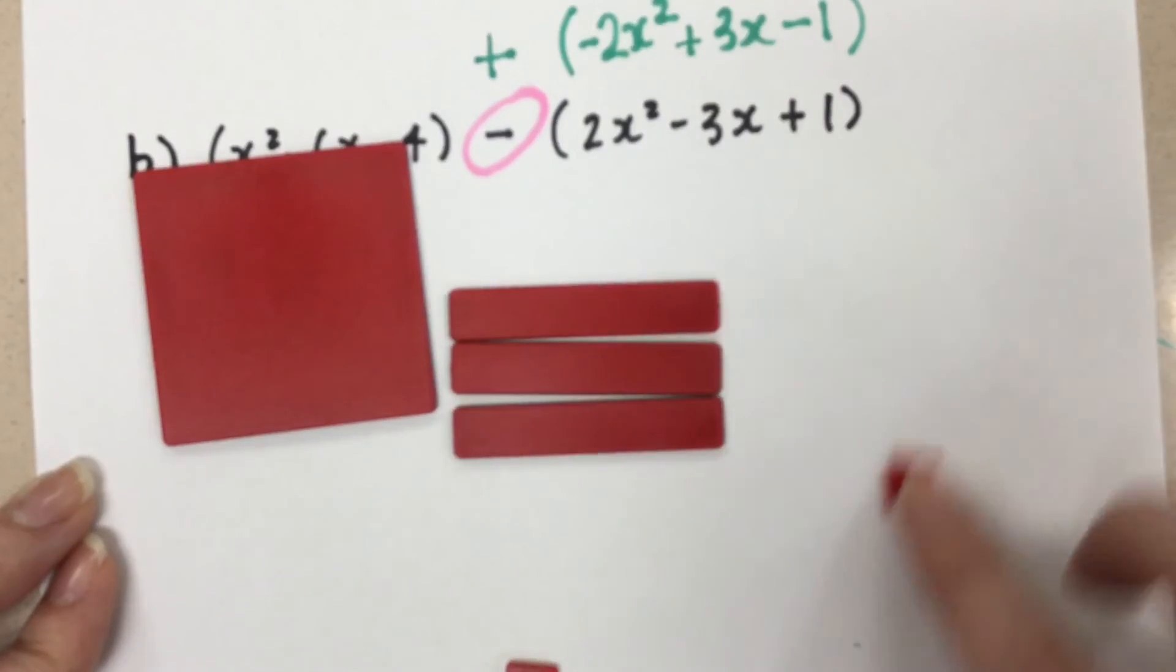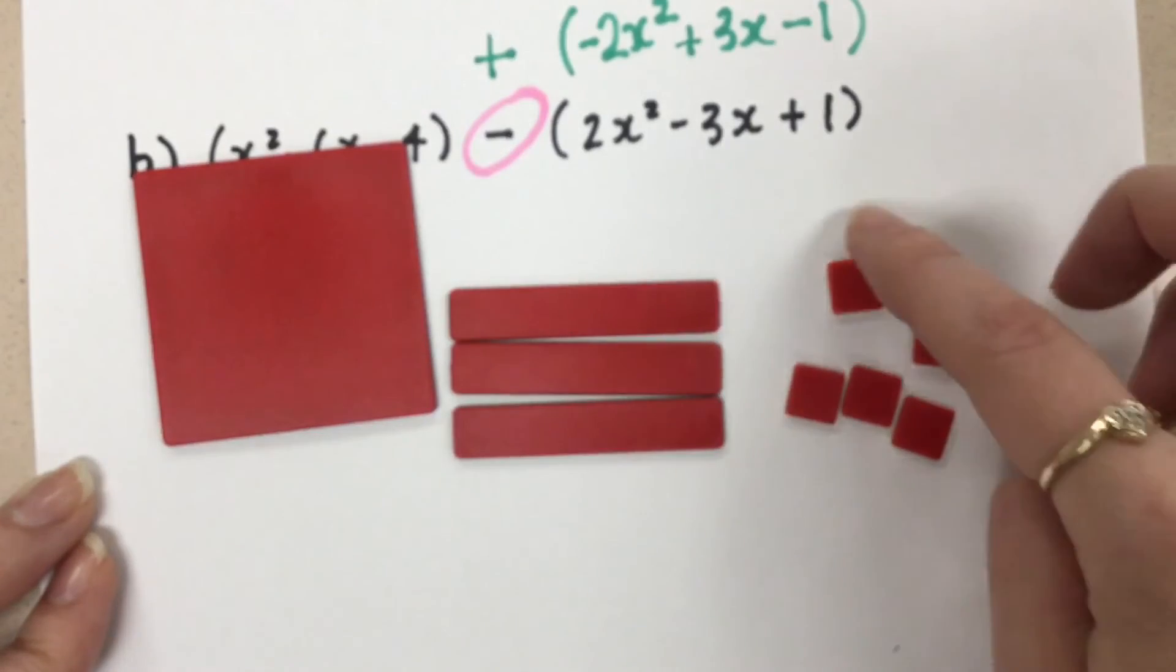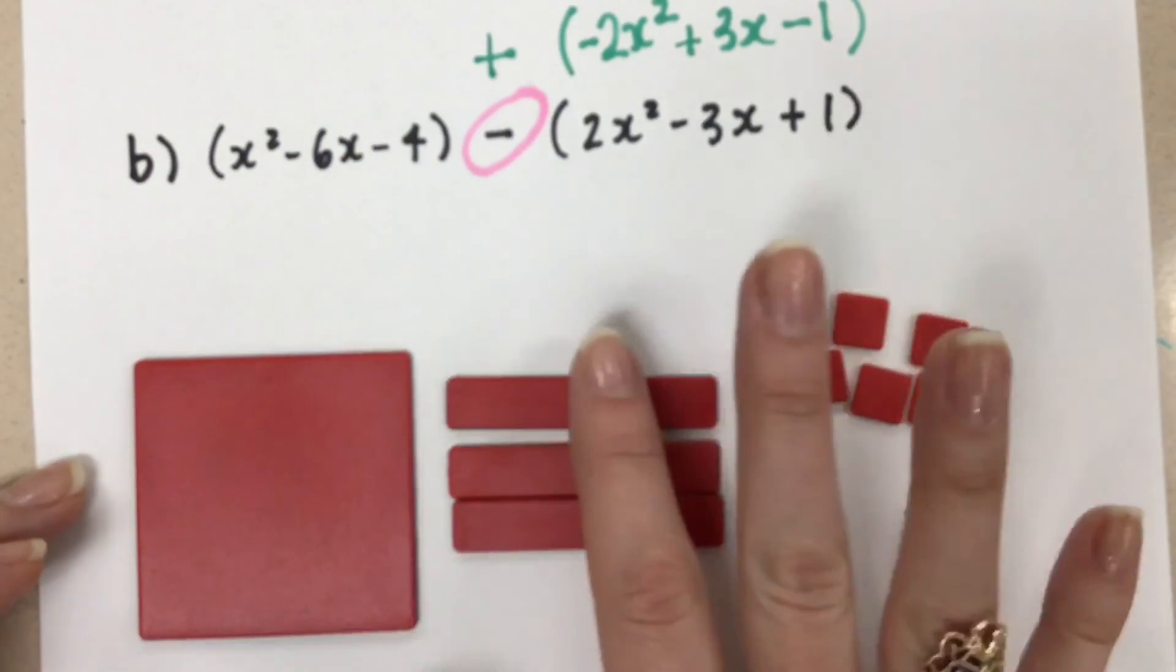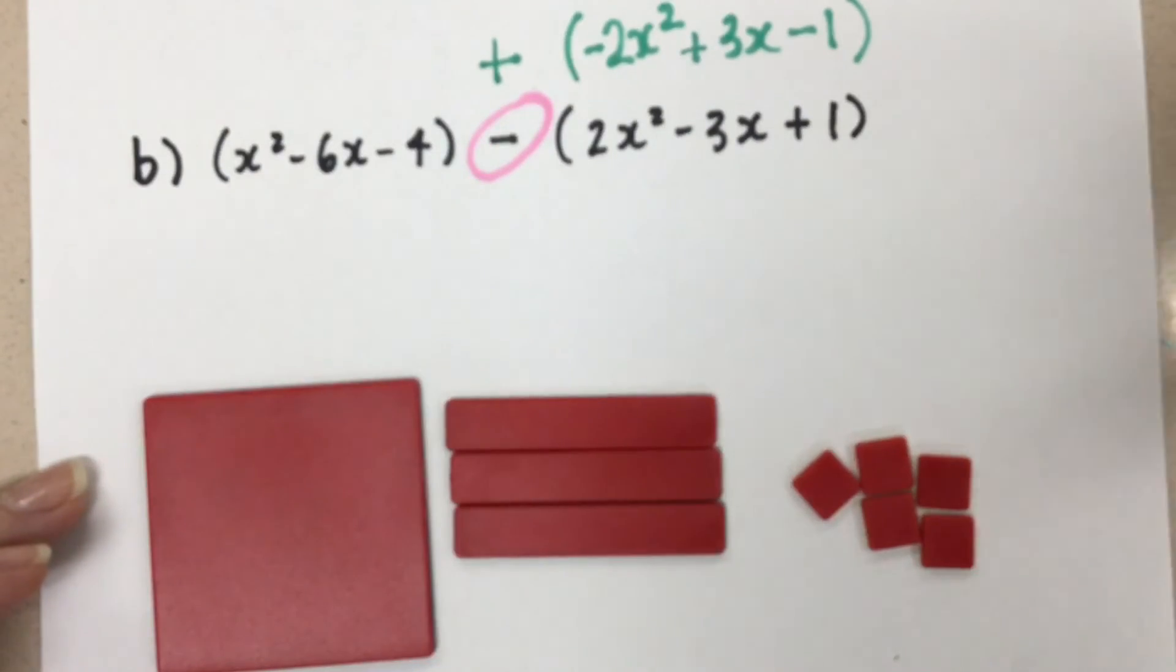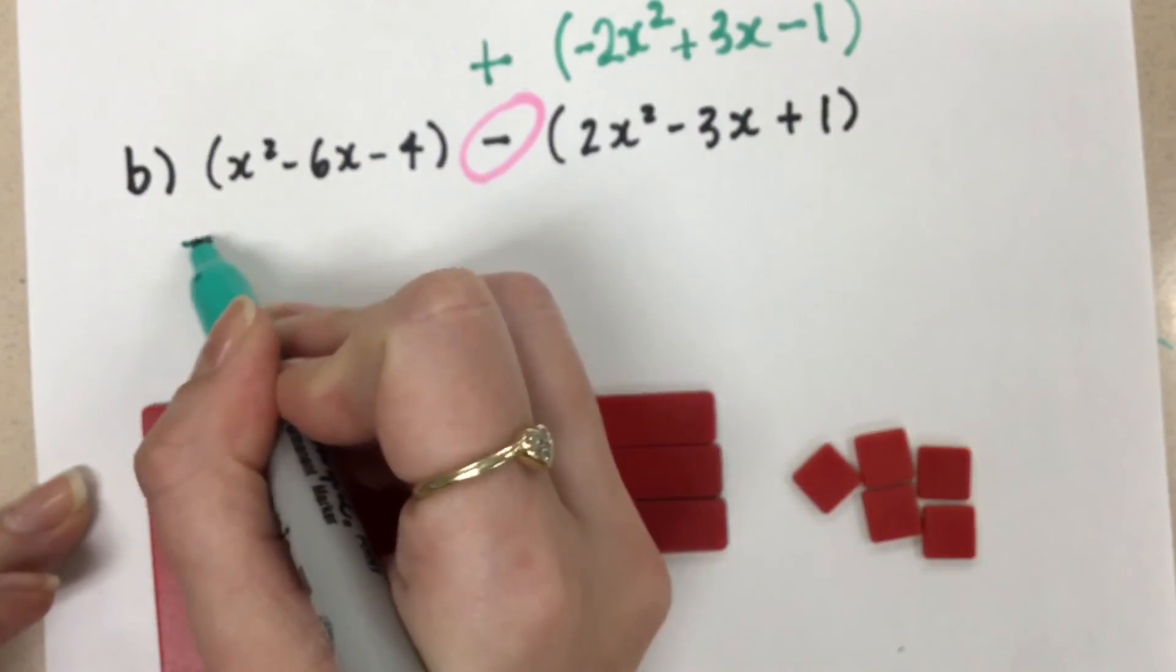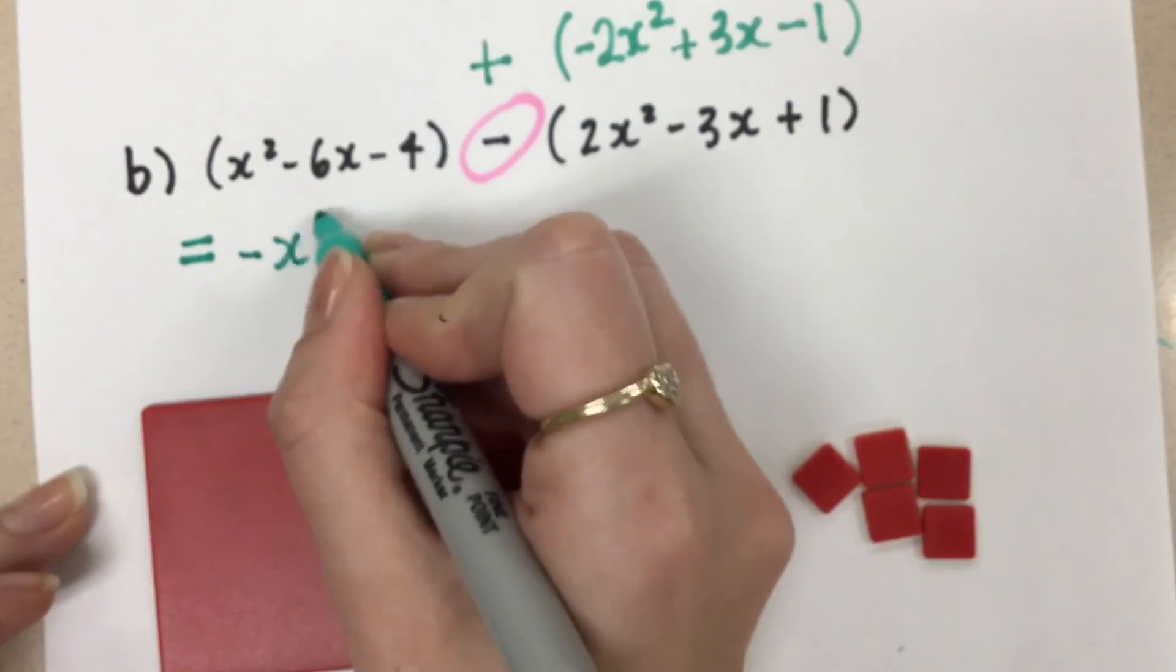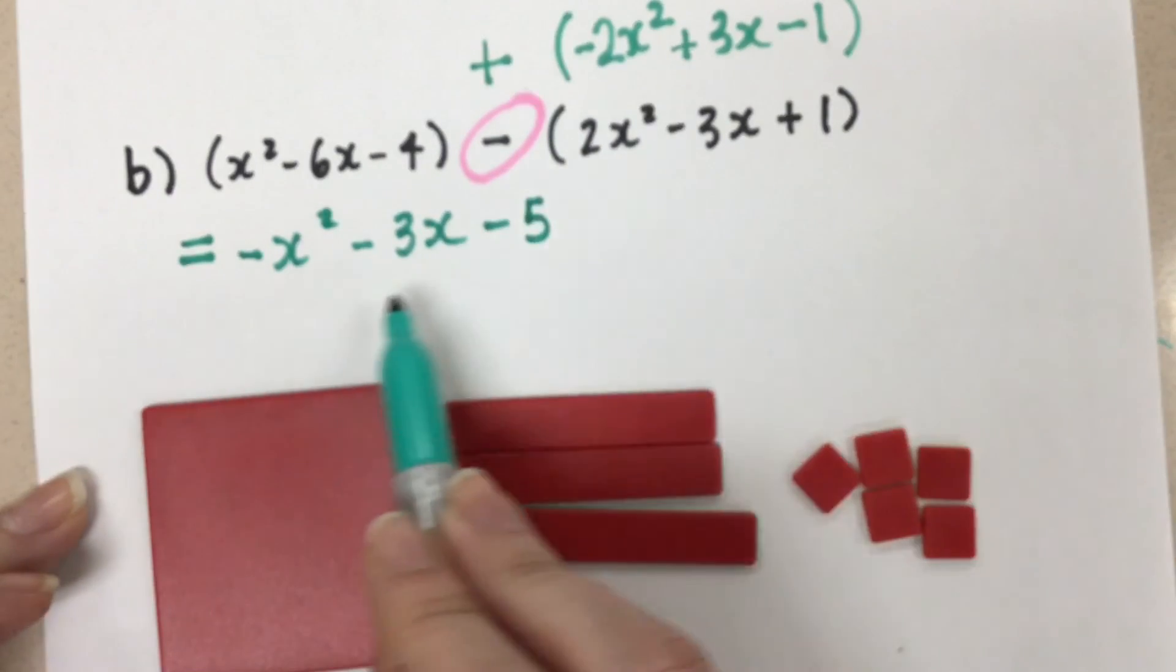Okay, let's do our 1's now. If we combine all our 1's together, well, actually we don't have any zero pairs to do. We just have red negative 1's. So our answer here all together ends up being negative x squared minus 3x minus 5. Let's put in our solution. We have negative x squared minus 3x and then minus 5. And that's our final answer there.